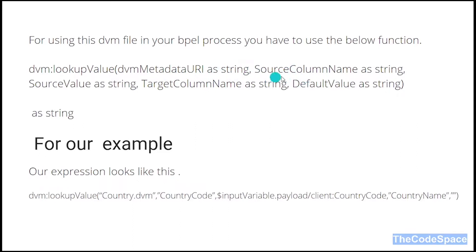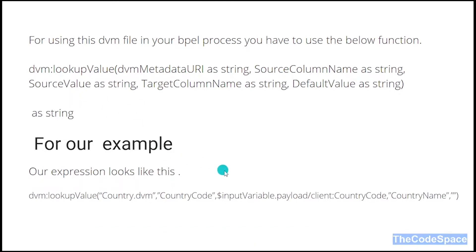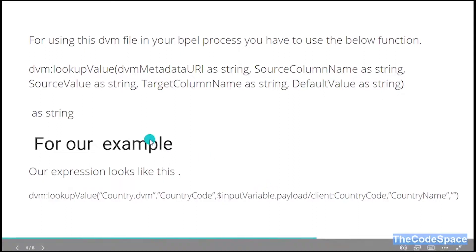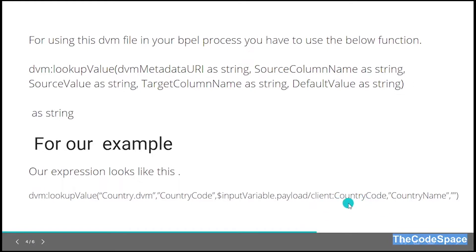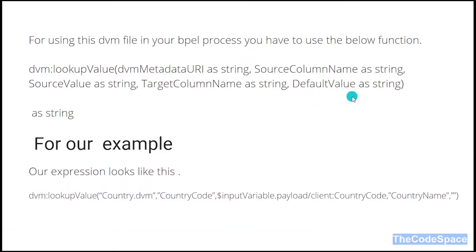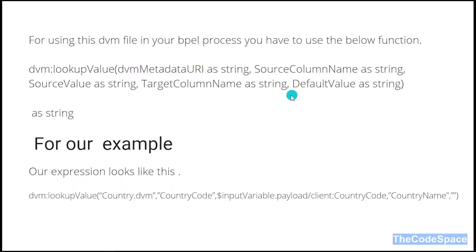The second parameter is the source column name — here we have 'country code' as the source column name, so we pass 'country code' there. The third parameter is the source value — when we create the schema we pass that variable here as the source value. The fourth parameter is the target column name — we want 'country name' as the target, so we pass 'country name'. The fifth parameter is a default value — if nothing matches in the DVM, that default value will be used.